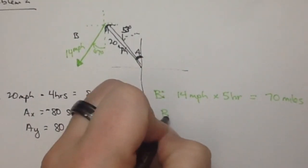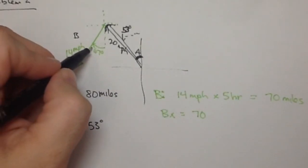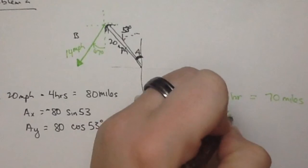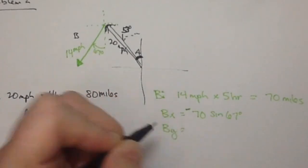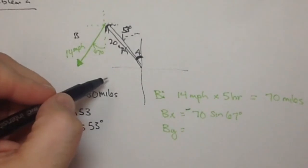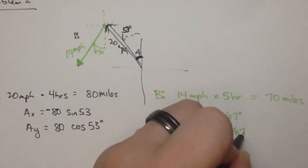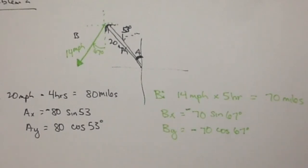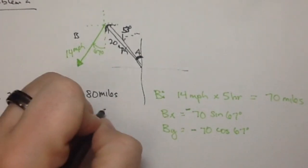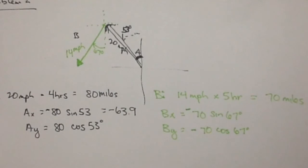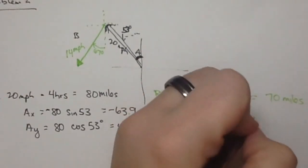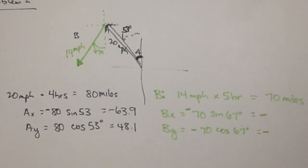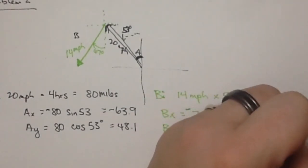So B_x then is going to be 70 times the sine of 67 degrees. But again, we're going to the left, so this will be negative. And B_y is going south, so this is also going to be negative. 70 cosine 67 degrees. So A_x is -63.9, A_y is 48.1. And then B_x is -64.4 and B_y is -27.4.